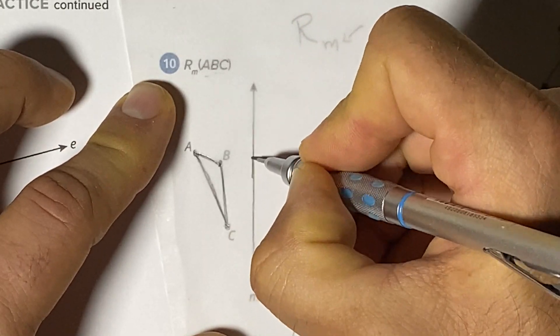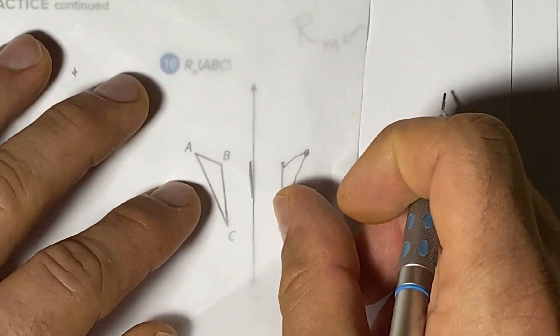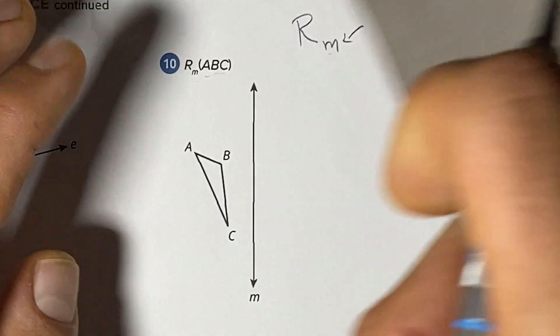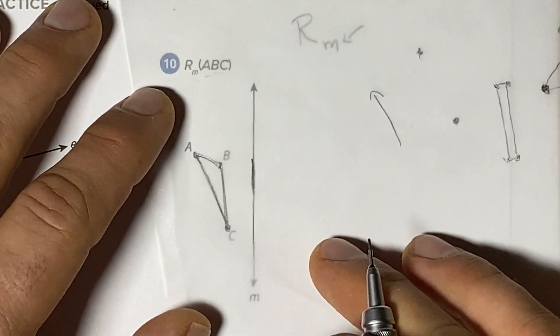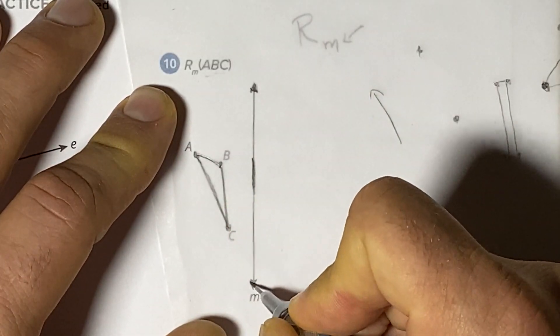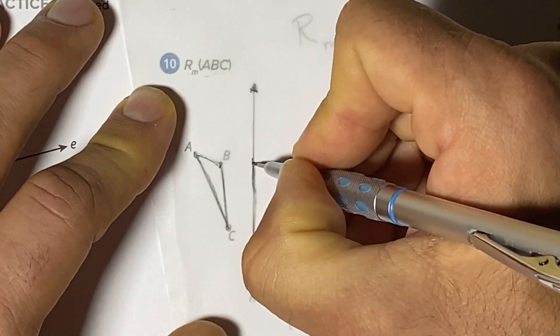We can't just trace some of the guideline because when we flip it over, we wouldn't know where exactly to line it up. We would just be estimating. So we want to draw the shape and the whole guideline. We want to put the ends of the arrows. Then we're going to flip it over.